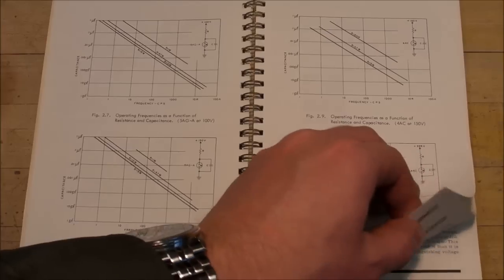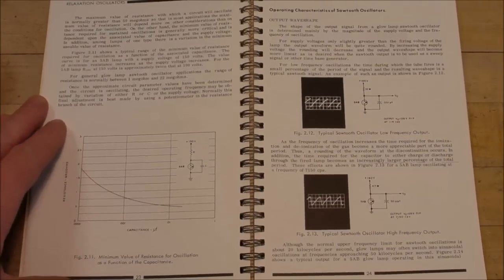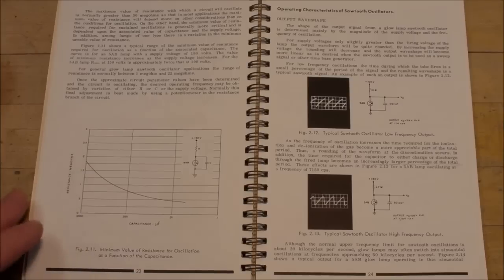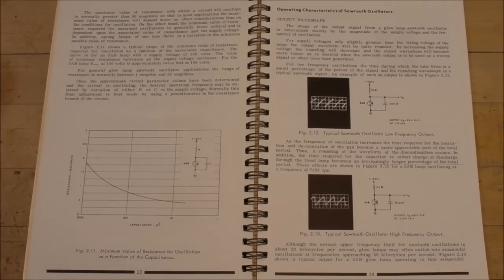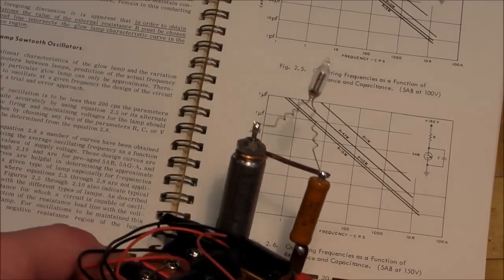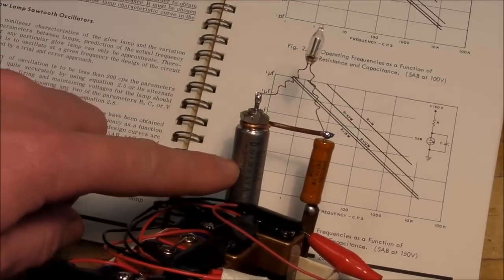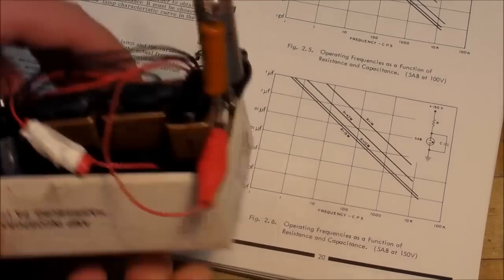But basically the best thing to do is to just build a circuit and play around with the components in order to get the particular frequency that you're aiming for. In my case I'm just using some old school components here. I got this 1 megohm resistor and 0.47 microfarad capacitor.